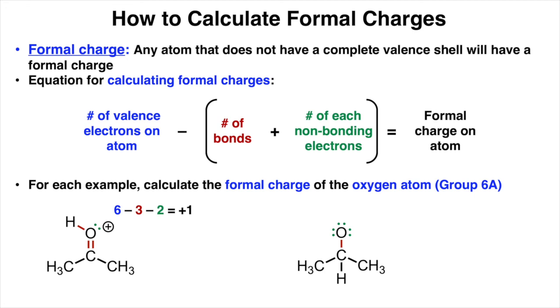In the next example, oxygen has one bond and six non-bonding electrons. So if we plug these values into the equation, oxygen has a formal charge of negative one, which we can specify with a negative charge in the molecule.